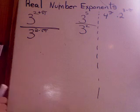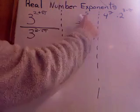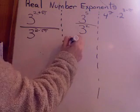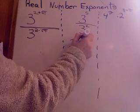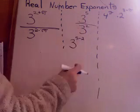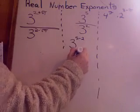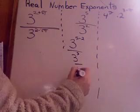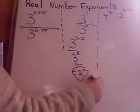I've got some more examples. Let's take the one in the middle first: 3 to the 5th over 3 squared. You could rewrite that as 3 to the (5 minus 2). Remember — are the bases the same? Yes. Division means you subtract. So that's 3 to the 3rd, which equals 27.